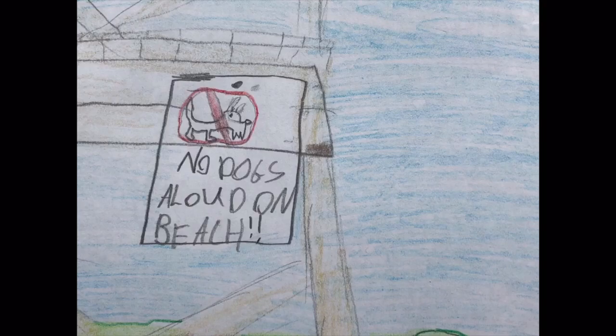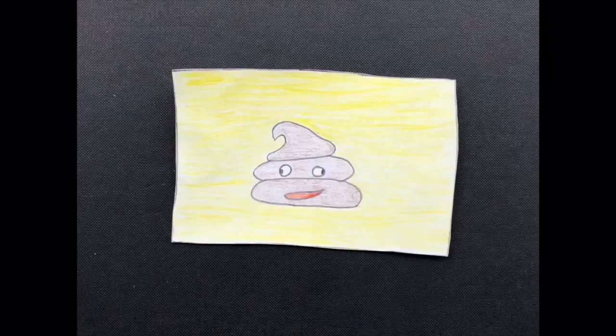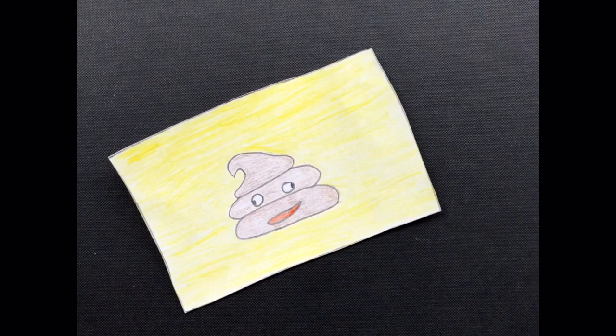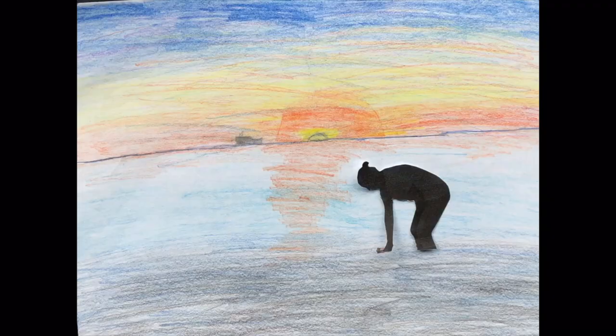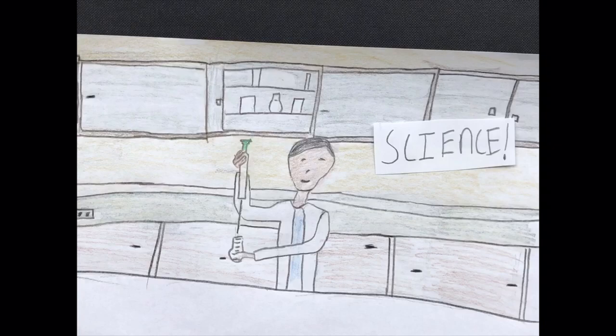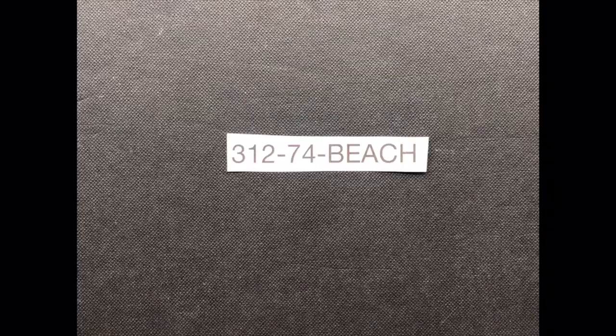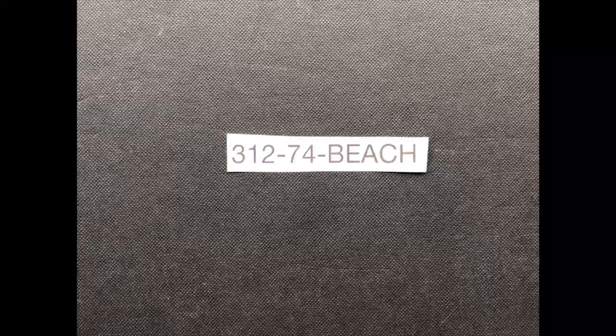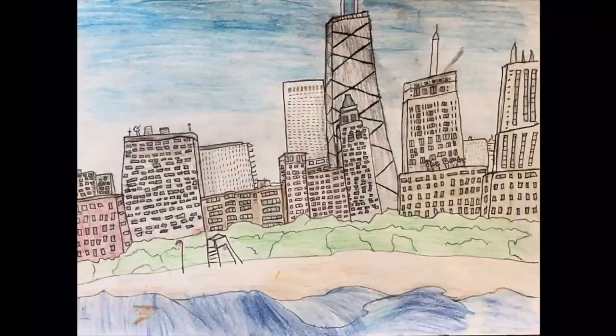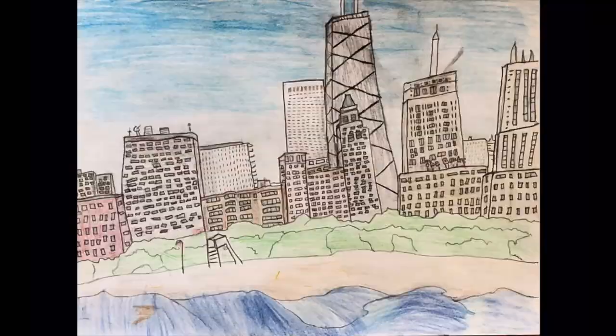After all, the bacteria is the same bacteria found in poop — like seagull poop or dog poop. Water samplers collect water from all the beaches every day during swimming season, and scientists do a super fast test. Results are posted the same day on the website. You can also call 312-74-BEACH for all the information you need to have a safe and healthy beach day. Remember — read the flags. A yellow flag could mean there's a high level of bacteria that may make you sick.